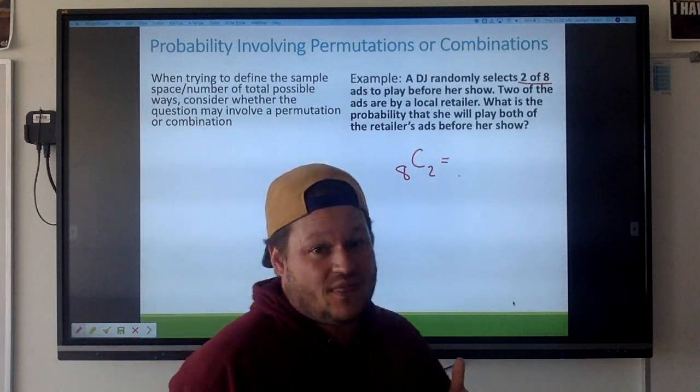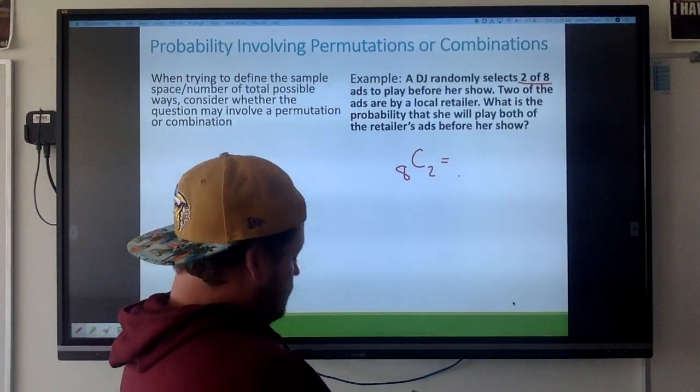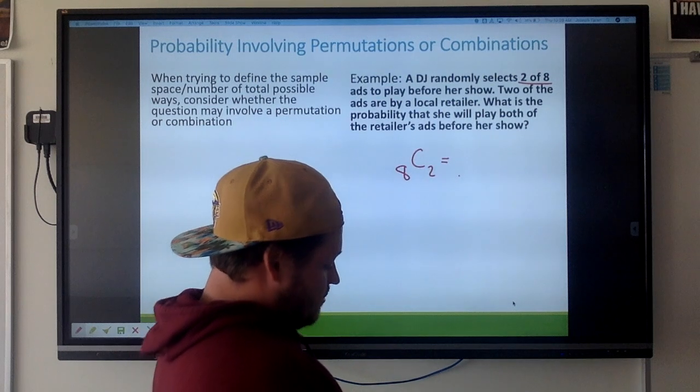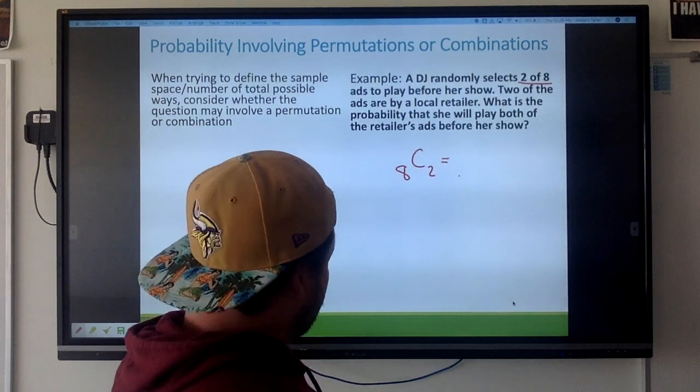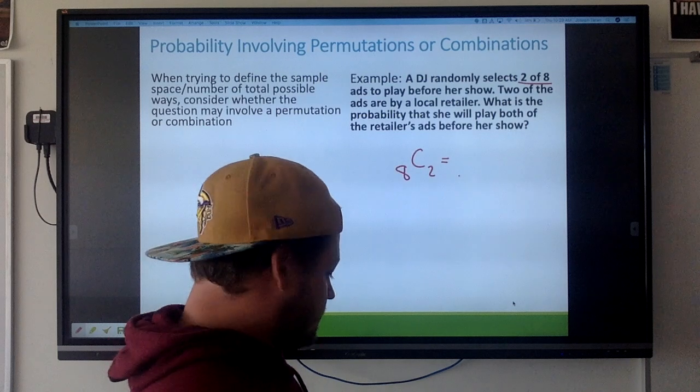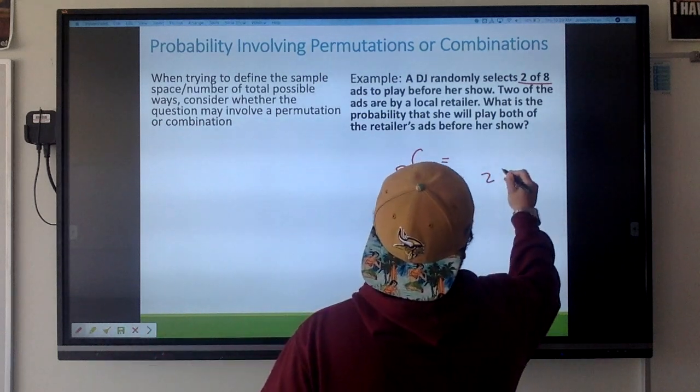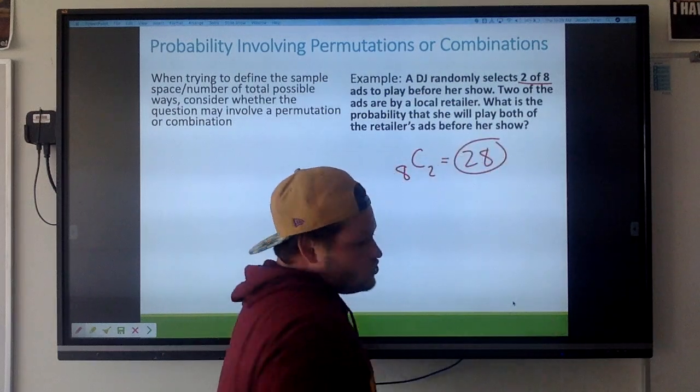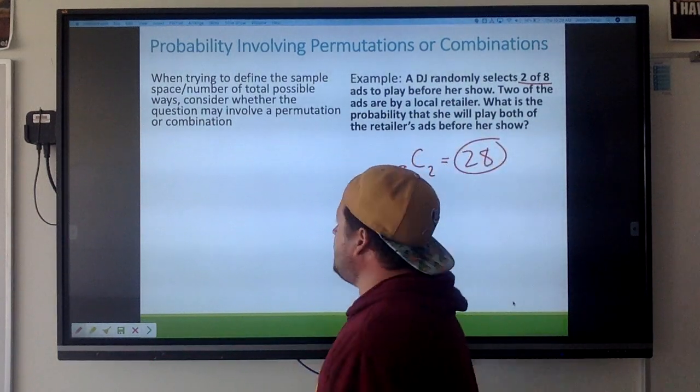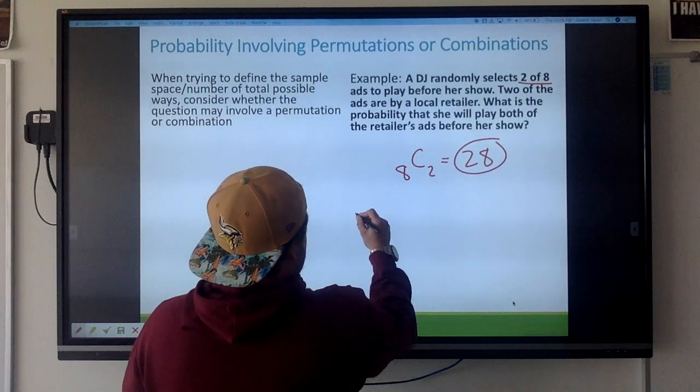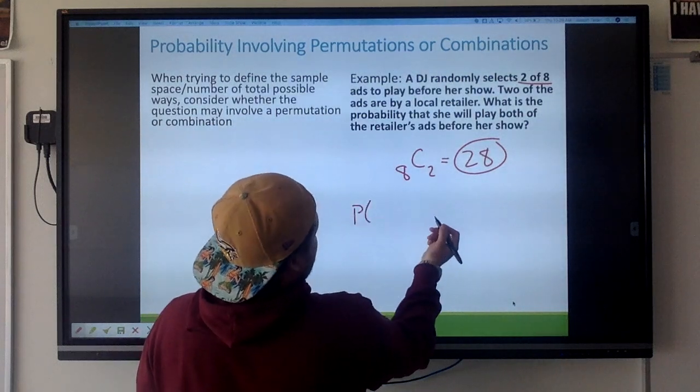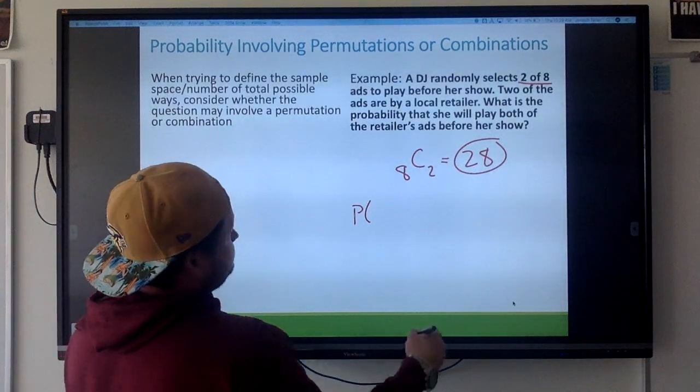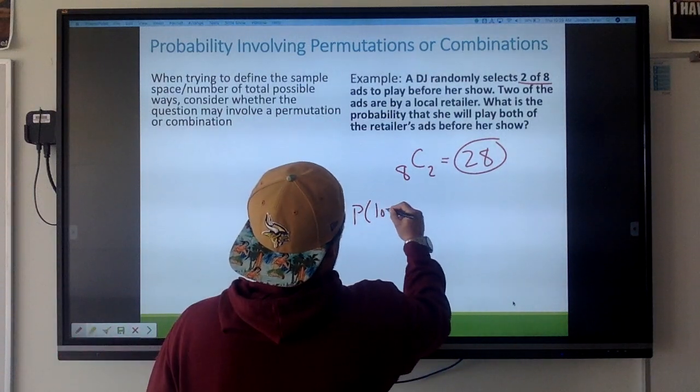So let's go ahead and first figure out what that number is. I'm going to hit 8 math, scroll over to prb, then select the nCr button, 2, and then hit enter and I'm getting 28. So there's 28 different ways she can do this. Now I'm going to ask the probability of, she wants the probability of what? Playing both the local retailers ads.